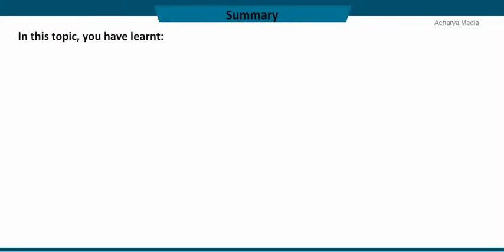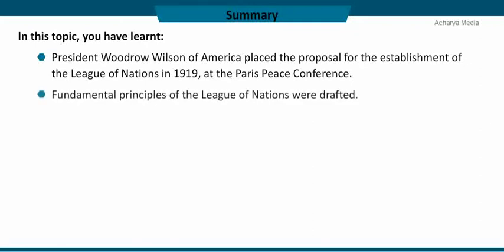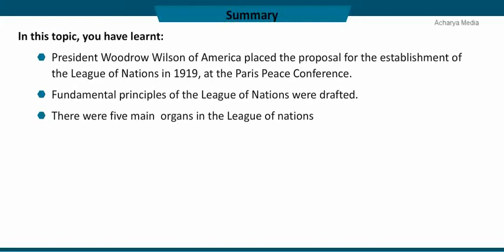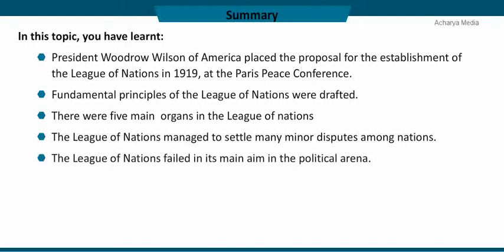In this topic, you have learnt that President Woodrow Wilson of America placed the proposal for the establishment of the League of Nations in 1919 at the Paris Peace Conference. The fundamental principles of the League of Nations were drafted, and there were five main organs in the League. The League managed to settle many minor disputes among nations, but ultimately failed in its main aim in the political arena.